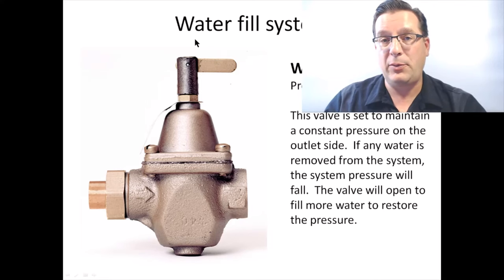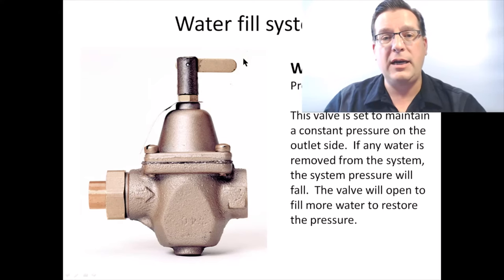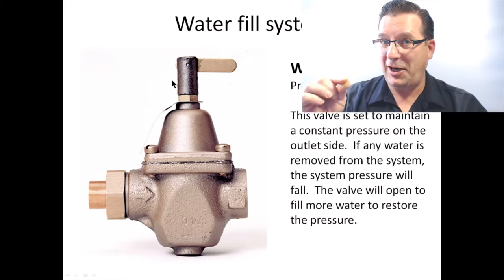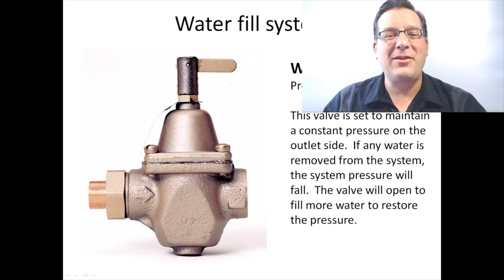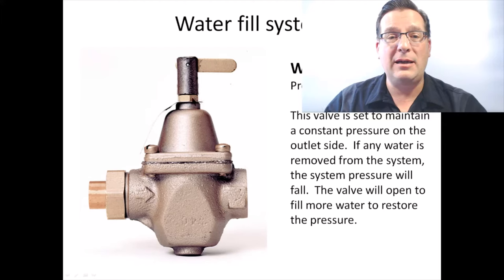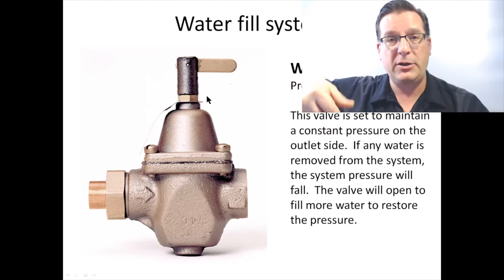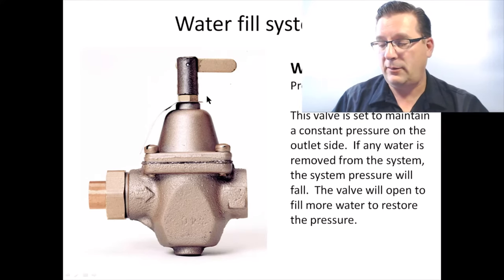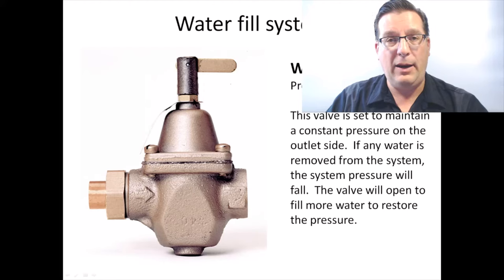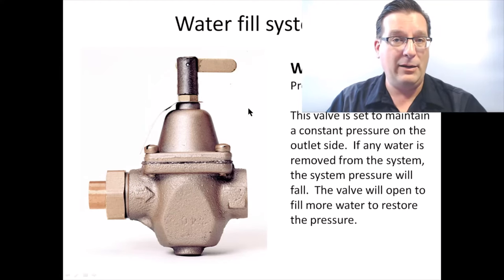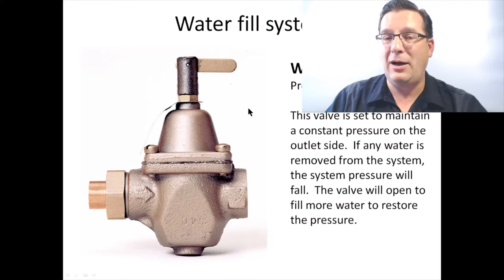To adjust this particular pressure reducing valve: first, unscrew the little top that has the fast fill handle. As soon as you take that off, there's going to be a little metal rod sticking up — pick that up and don't lose it. Next, this nut here is just a lock nut to stop the adjustment from changing — simply loosen it up. Now the threaded collar is your pressure adjustment. There's a little screwdriver slot in the top: screw it in to increase pressure, screw it out to decrease pressure. Once finished, tighten the lock nut back down, put the metal rod back in, and tighten the top back on. Done — not too tough.